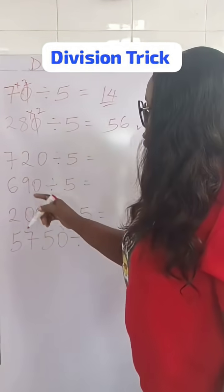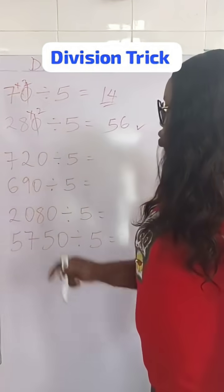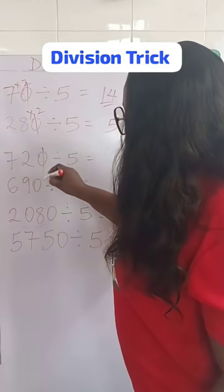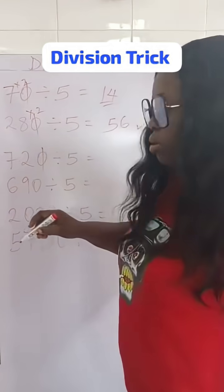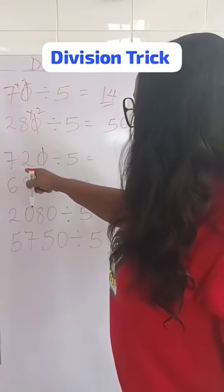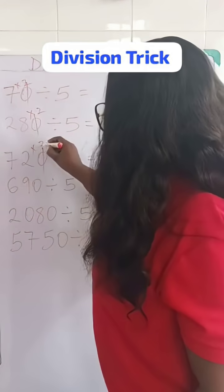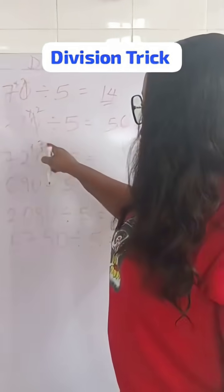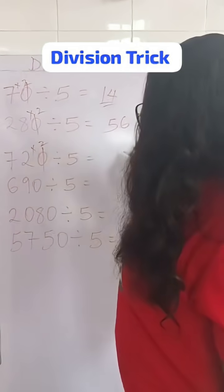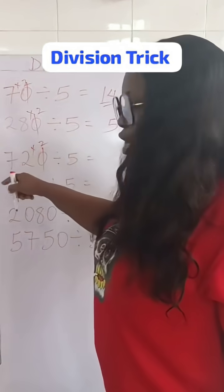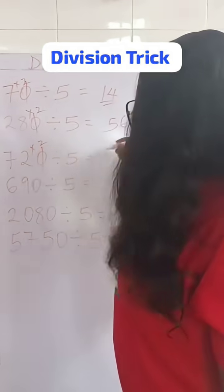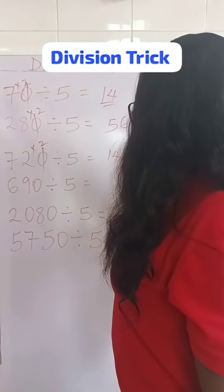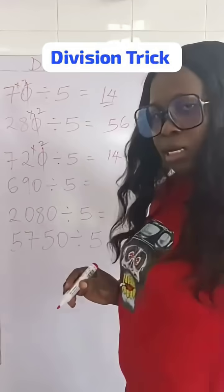Let's go to number 3. We have 720 divided by 5. Just cancel the 0, multiply 72 by 2, and we get 2 times 2 is 4, and 2 times 7 is 14. So our answer is 144.